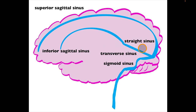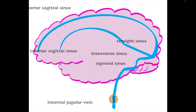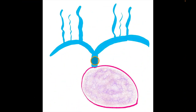Ultimately, all of this blood leads into the internal jugular vein, which brings blood back toward the heart. Let's look at where the internal jugular vein meets up with other veins before entering the superior vena cava, which drains into the right atrium.